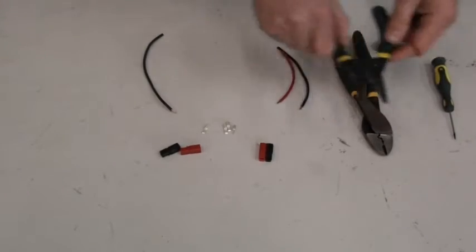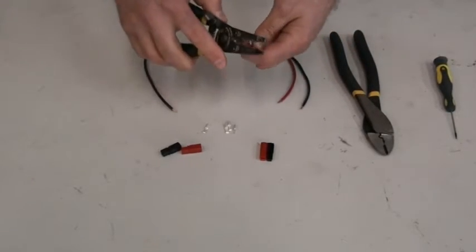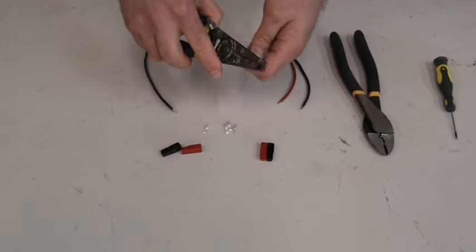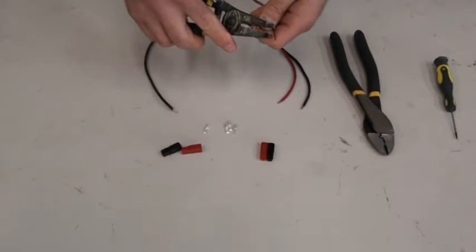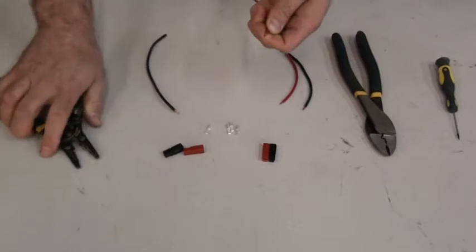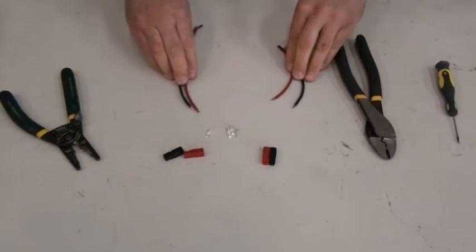First you use the wire stripper, and you just take off maybe a quarter of an inch of the sheathing of the wire. Now I've done it to the rest here to save time.